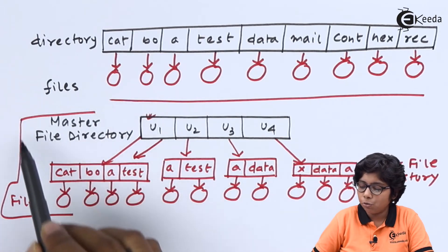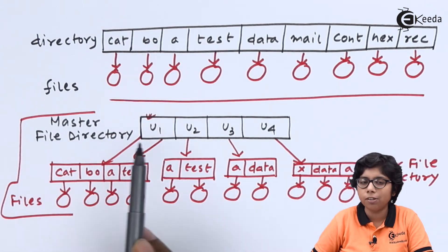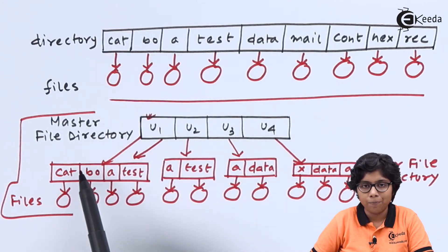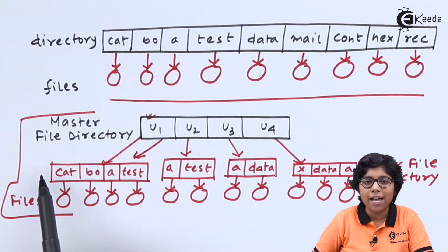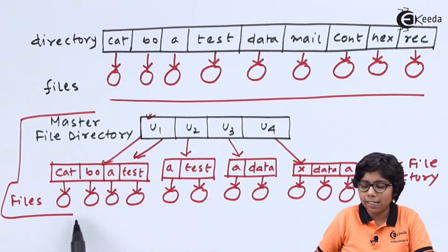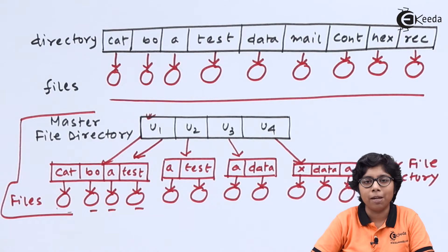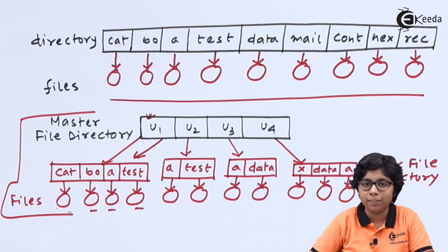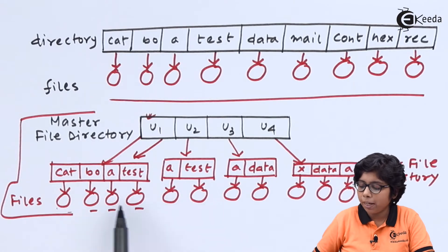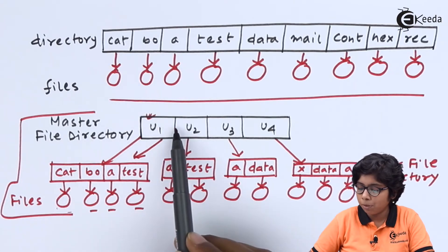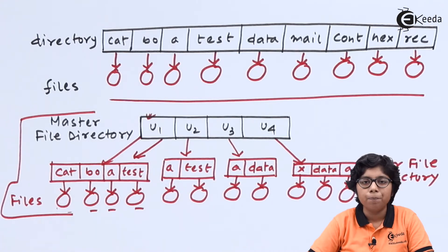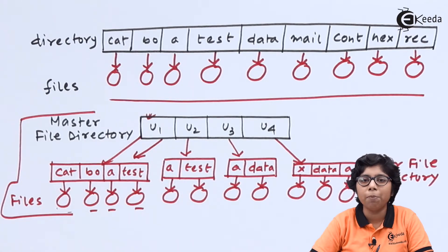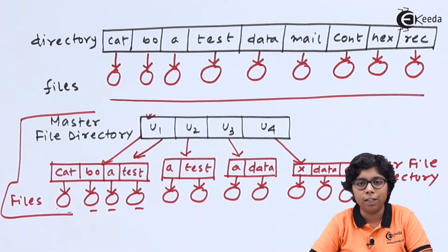We can think of the two-level directory as a tree of height 2, or an inverted tree of height 2. At the root is the master file directory with user names and pointers. As descendants, we have the user file directories, and their descendants are the actual files — the leaves of the tree. Files can be accessed by constructing a path name from the root to the leaf, that is from the MFD via the UFD to the final files.